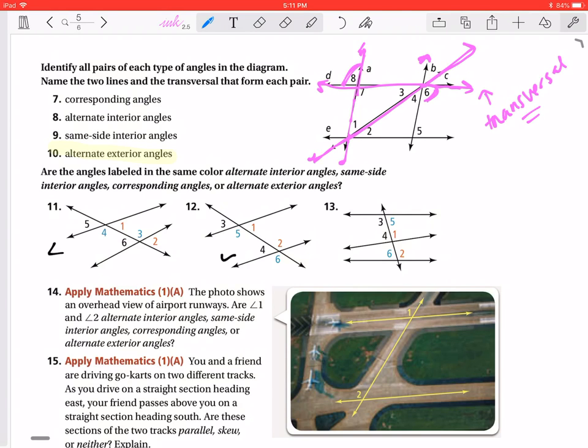Again, when we're just looking at whether or not they are alternate exterior or alternate interior, they don't have to have parallel lines. The definition of a transversal is a line intersecting two other lines. Those two other lines can intersect, which if we notice from this diagram, those two other lines intersect as well.